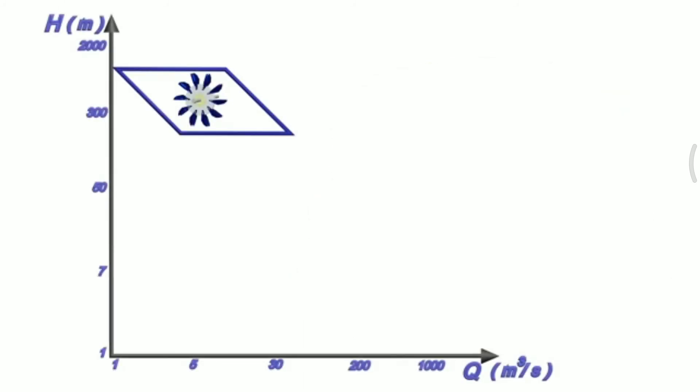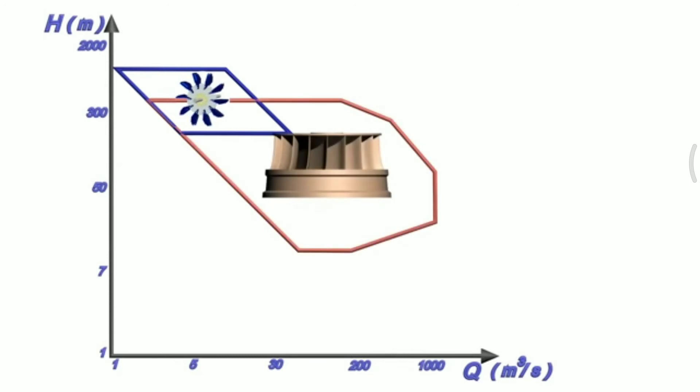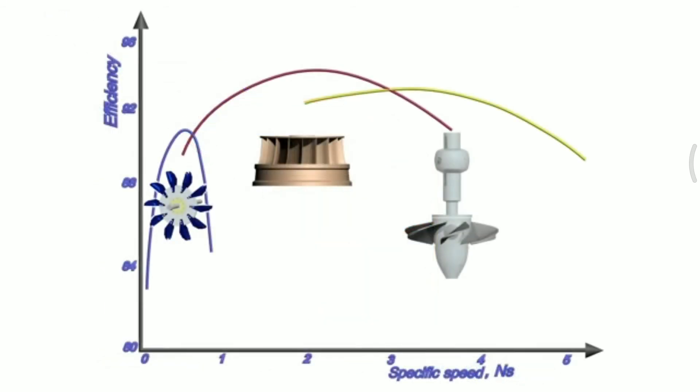This graph gives a clear idea about when to use which turbine, depending upon available water head and flow rate. It is obvious that Francis turbine covers a wide range of operating conditions. They can work efficiently in wide range of operating conditions. This is why Francis turbine is the most preferred hydraulic turbine.